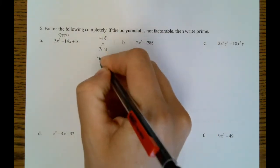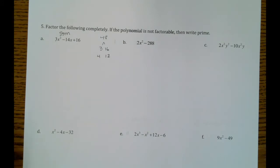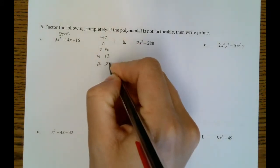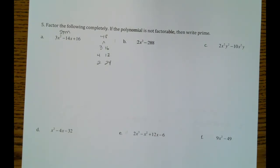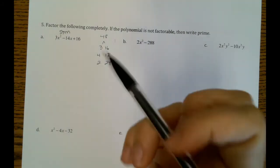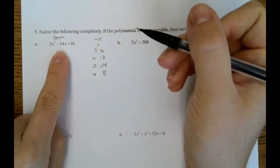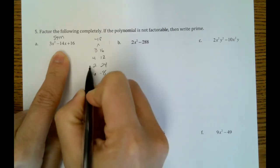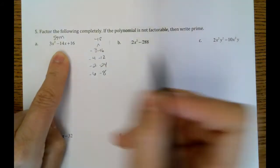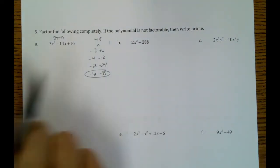4 and 12, 2 and 24. What else are we missing? 2, 3, 4, 6, 48. 6 and 8. I think that's all of them. So then if we look at which one of these would add to a negative 14, we're going to have to make these options negative because a negative times a negative would be a positive. Negative 6 and negative 8 will add to negative 14.